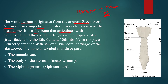The sternum articulates with the clavicle and the costal cartilage of the upper seven ribs. The upper seven ribs are true ribs and are joined directly with the sternum. The eighth, ninth, and tenth ribs are false ribs — they are indirectly attached via costal cartilage. The bone is divided into three parts: first is the manubrium, second is the body (also known as mesosternum), and third is the xiphoid process (also known as xiphisternum).